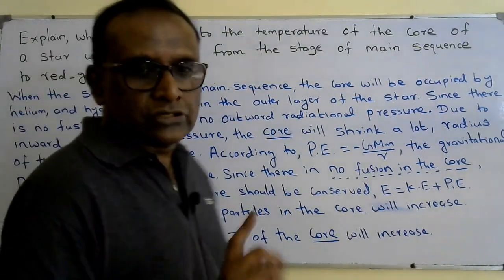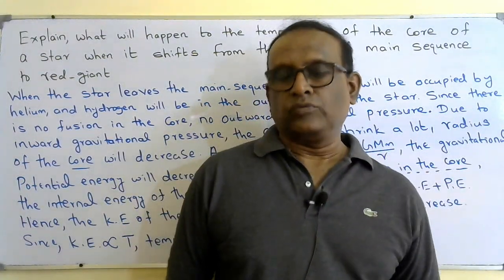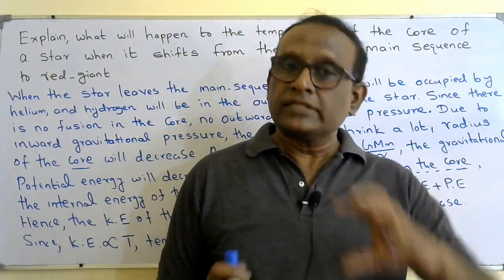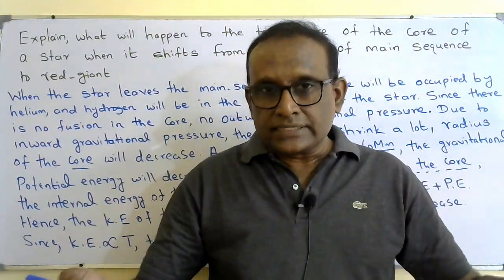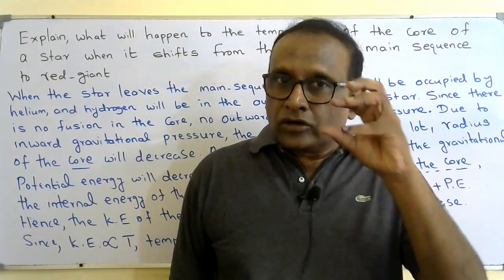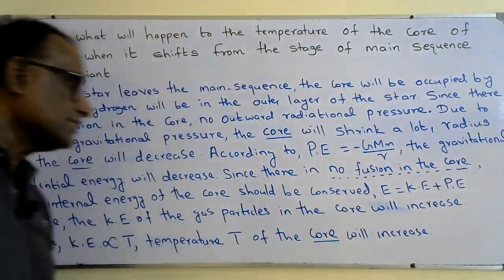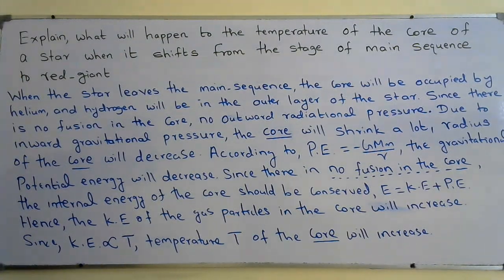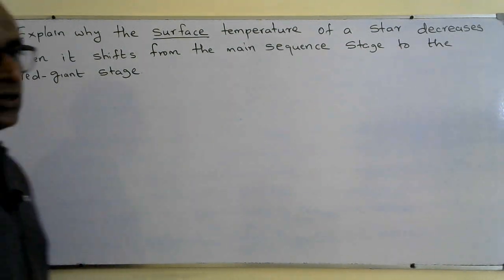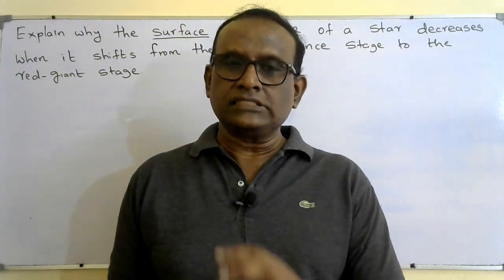Careful — this question is about the temperature of the core. I am not comparing the temperature of the red giant star's outer surface. What we call the 'temperature of the red giant dropping' — that is the outer surface temperature. But this question is about the core, and the core temperature will increase. We saw that the temperature of the core will increase when a star shifts from main sequence to red giant.